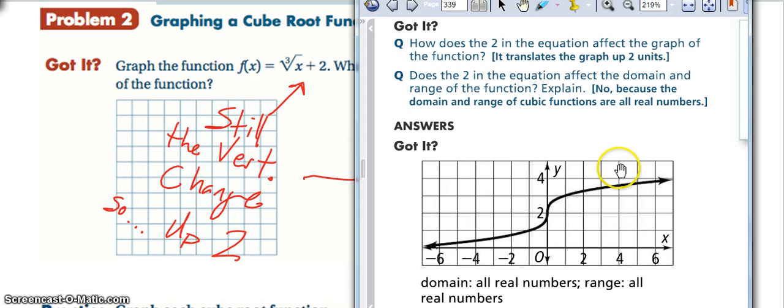Same exact graph as the original cube root, except it is shifted up by 2. And up here, you can see the two other questions posed by the got it. It does not affect the domain or range because all it did was shift it up. So my domain is still all x values and my range is still all possible y values.